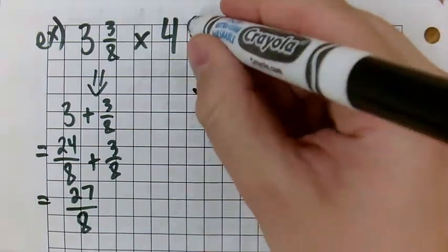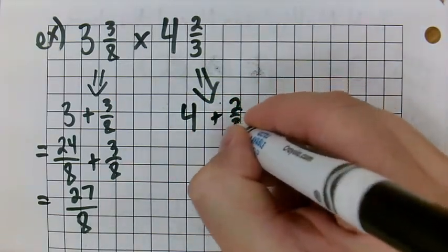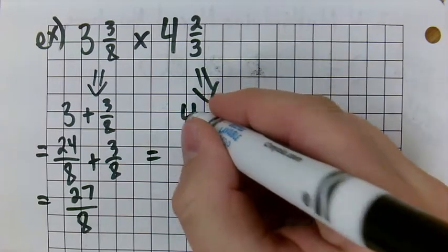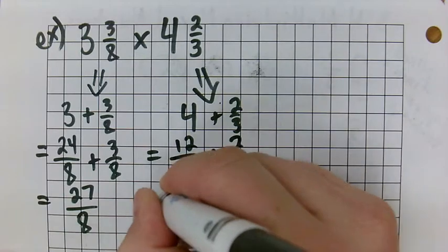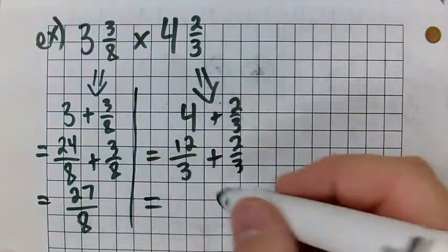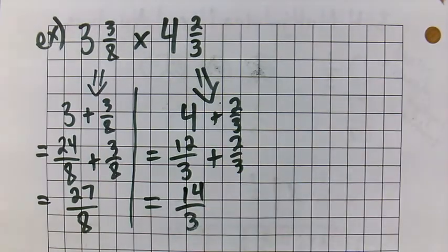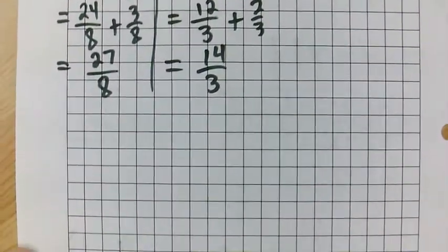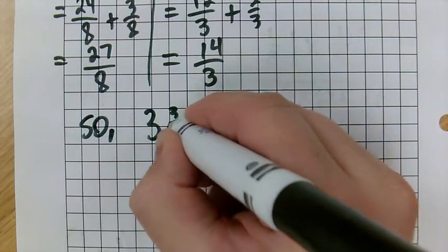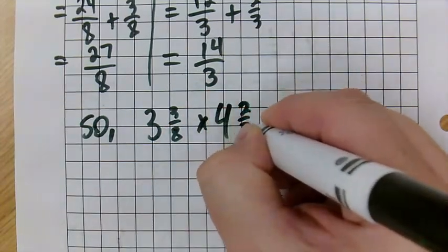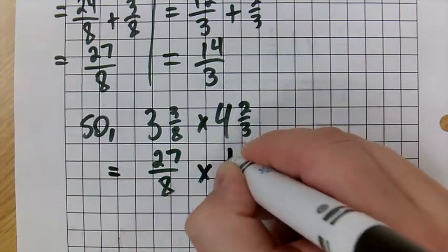So this one here, we're going to turn into also the same thing, 4 plus 2 thirds. We need thirds on the bottom. What's 3 times 4? That's 12 thirds plus 2 thirds, which equals, let's just separate that so it's not getting confused, is 14 thirds. So, we can say that 3 and 3 eighths times 4 and 2 thirds is equal to 27 eighths times 14 thirds.